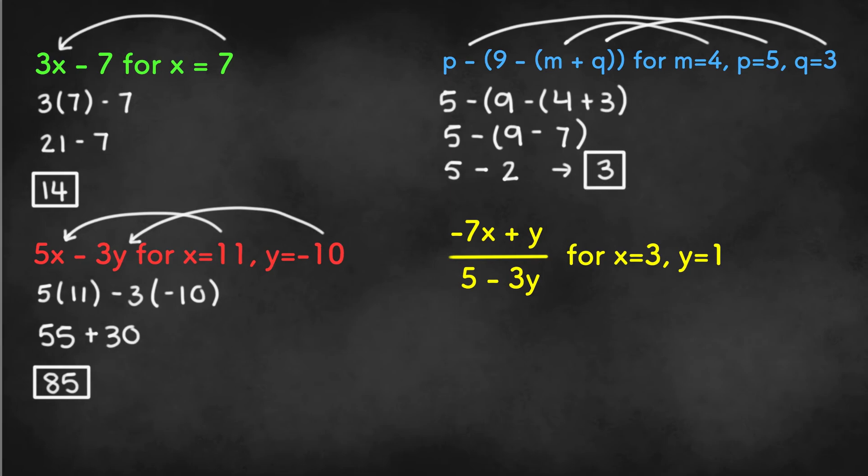In the final example, we need to plug in 3 for x and 1 for both of the y values. Once we do that, we will get negative 7 times 3 plus 1, all divided by 5 minus 3 times 1.